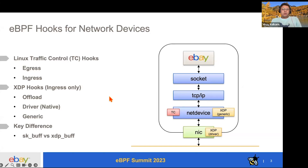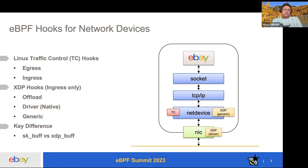XDP hooks have different modes: the offload mode, the driver mode, and the generic mode. In offload mode, the eBPF program runs in the NIC. In driver mode, it runs as early as possible when the driver is invoked and handling the packet. In generic mode, it's used mainly for testing, as we'll discuss later. A key difference between the two is that TC eBPF programs handle SK buff parameters, versus XDP buff, which requires buffers that are serialized.